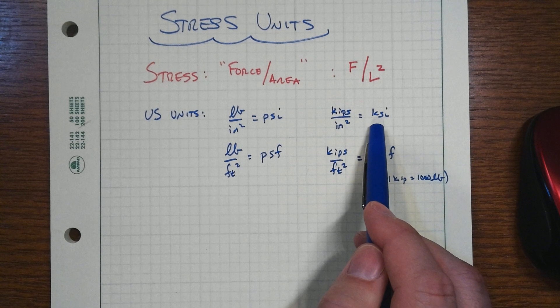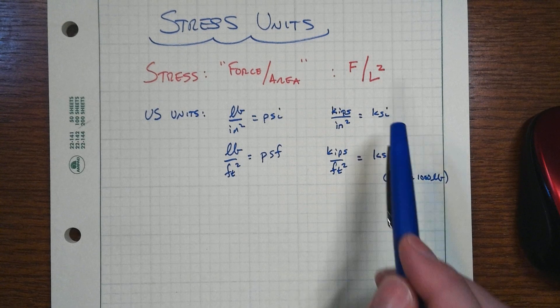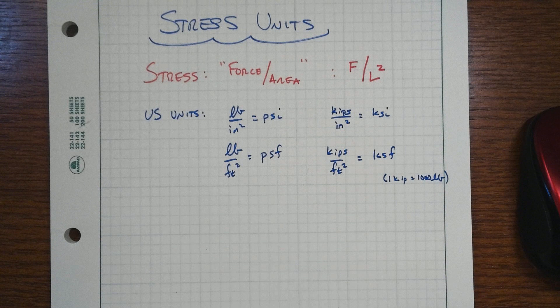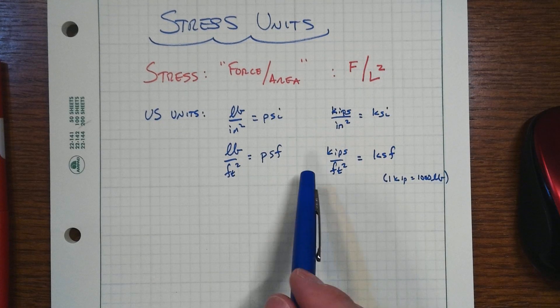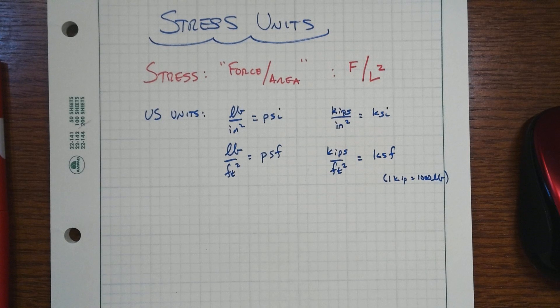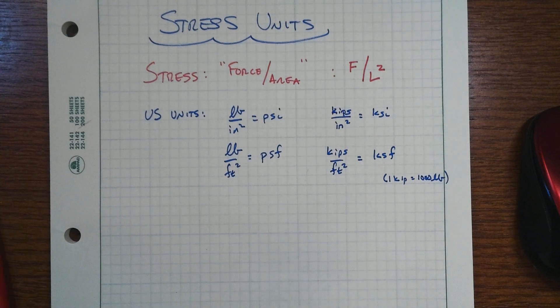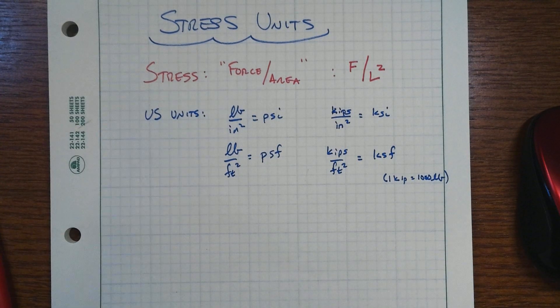We have steels that go up over 100 KSI, particularly for things like high-strength wire cable, that sort of thing. And so that gives you a little bit of a sense of the range of these values.